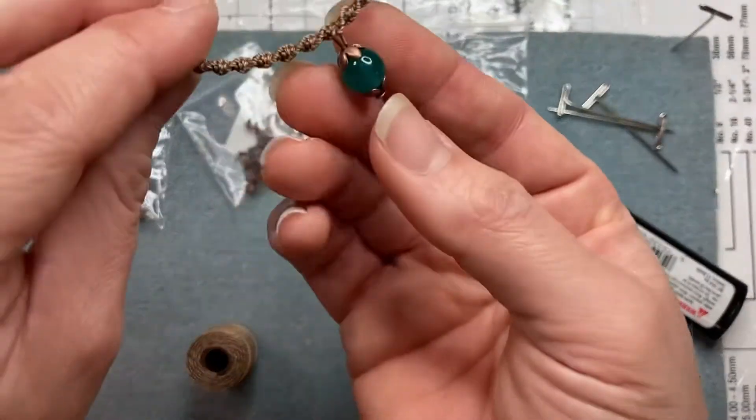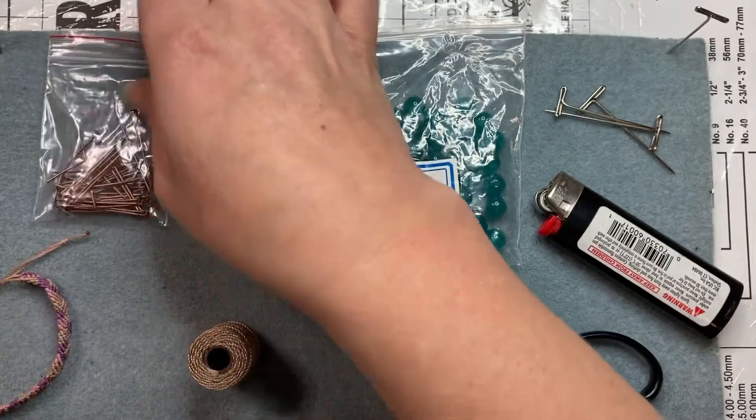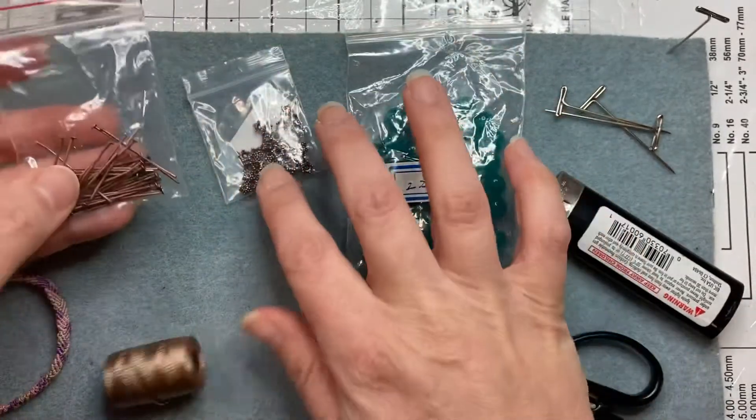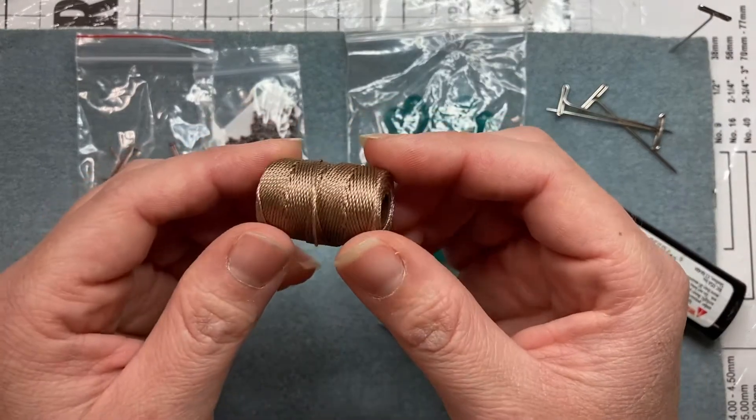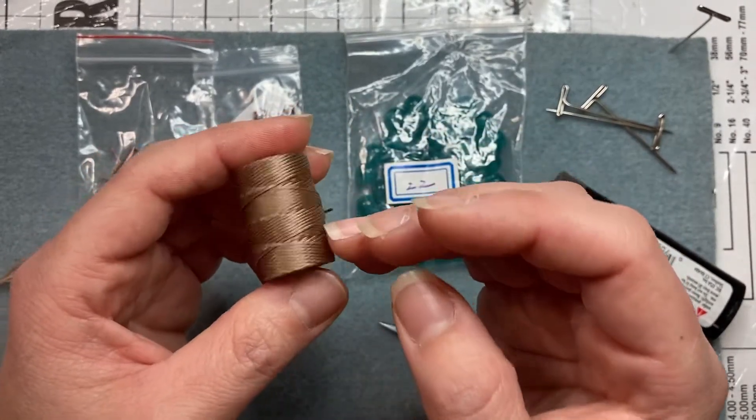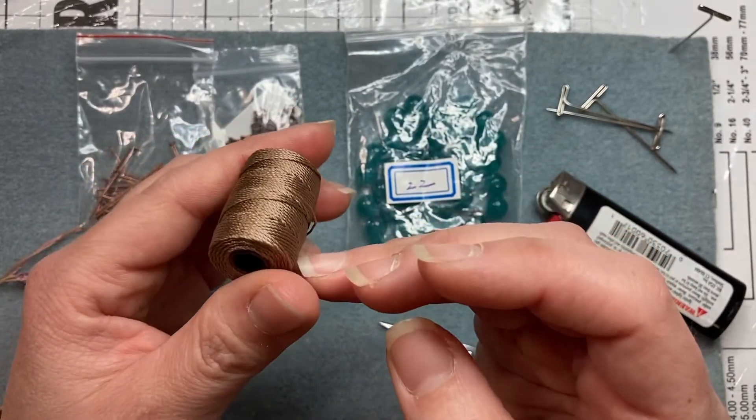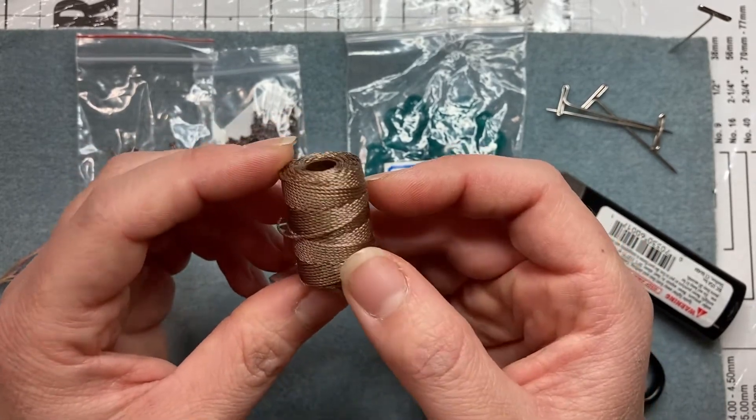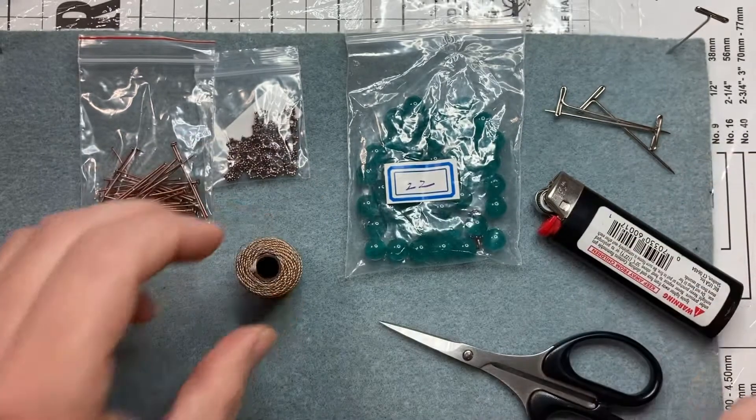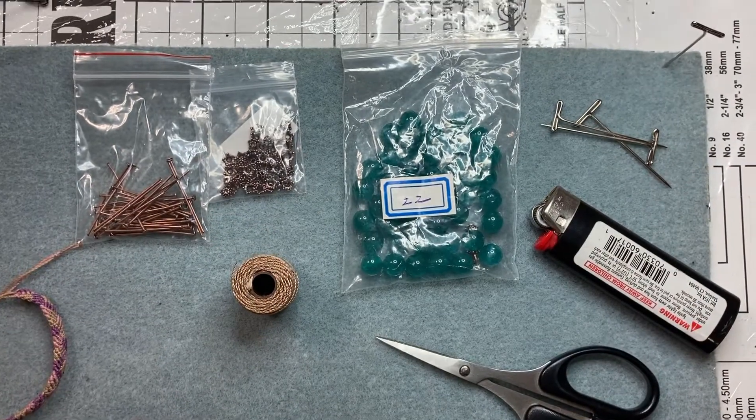To create this little charm I had to use head pins as well as bead caps, and then the cord that I used is an Eslon cord in 0.5mm in this light brown color. So let's pull things to the side and let's get started.